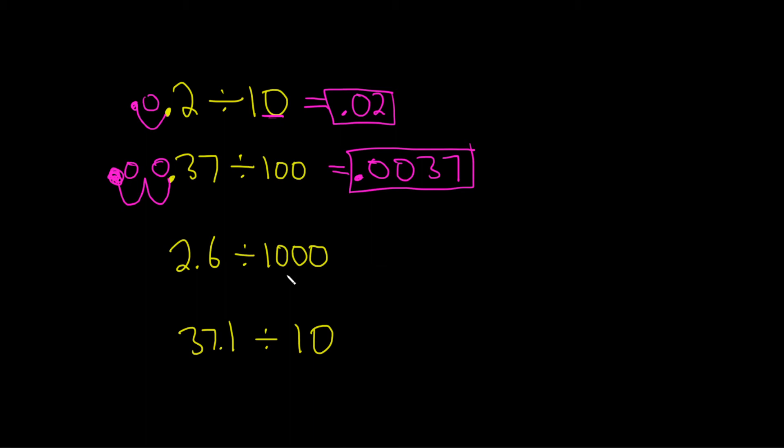Here, we're dividing by 1,000. So we're going to go to the left one, two, three times. From here, we just count left three times. One, two, three, and put a giant dot. One, two. So the answer is .0026.